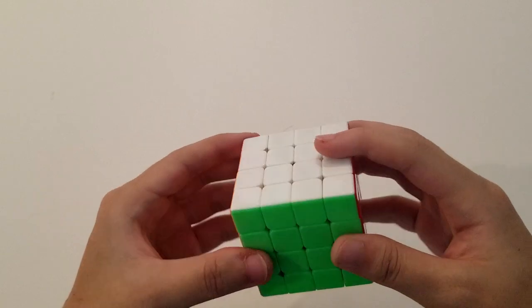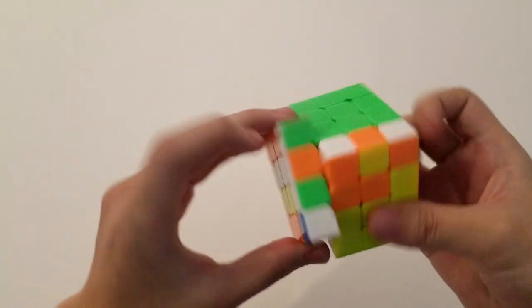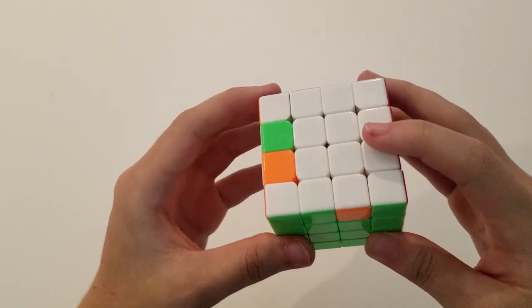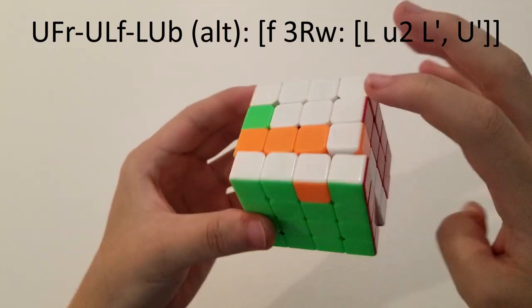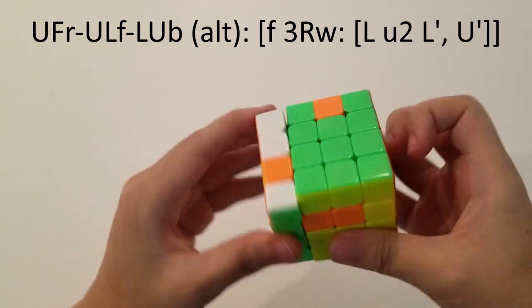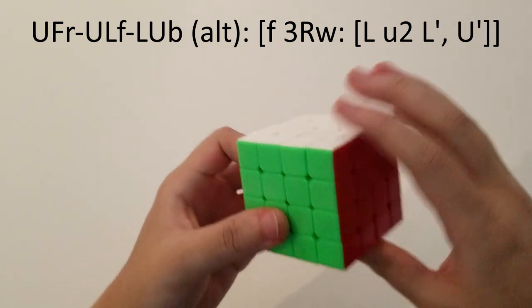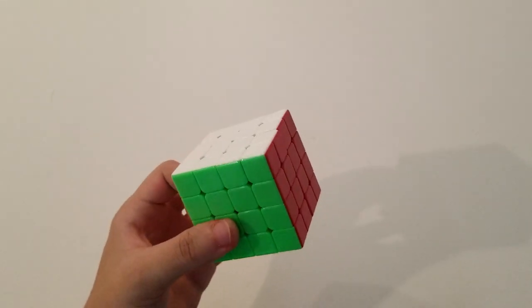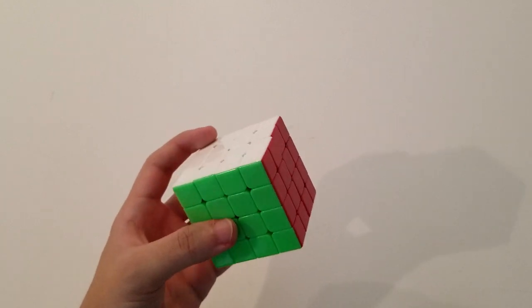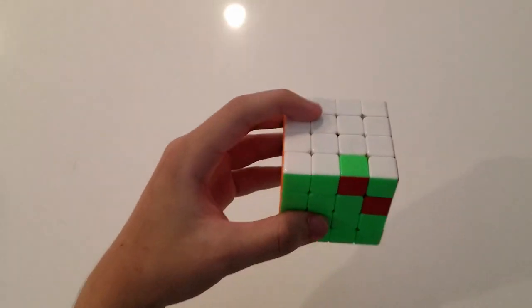There's a very similar alg, which some people use. It essentially involves, instead of doing an F-2 slice at the beginning, just do an F. And that puts this right here, and we have a similar 8-mover, but with a U-2 insertion. This doesn't work quite as well for me, but I think it's very much personal preference, and you can take your pick on which one you like more.